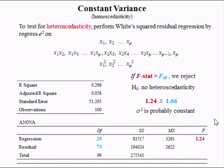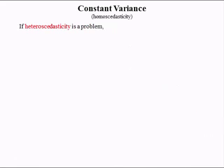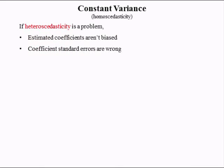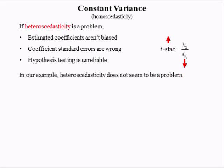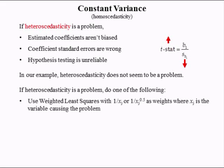If heteroscedasticity is a problem, estimated coefficients aren't biased, but coefficient standard errors are wrong. If the standard error is too large, that will deflate the T-stat. If the standard error is small because of heteroscedasticity, the T-stat will be large. Hence, hypothesis testing is unreliable. In our example, heteroscedasticity does not seem to be a problem. If heteroscedasticity is a problem, you can use weighted least squares or compute Huber-White standard errors, but this is beyond the scope of this course.